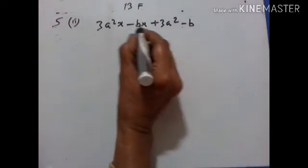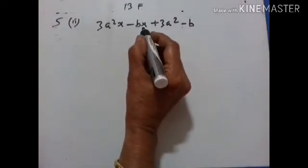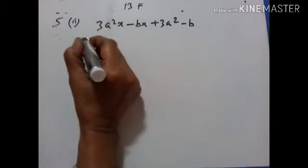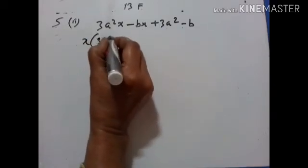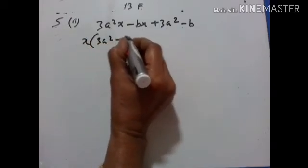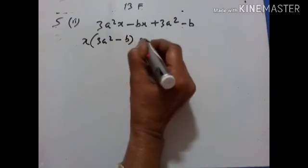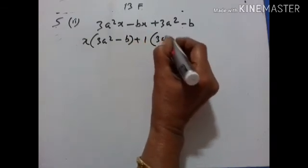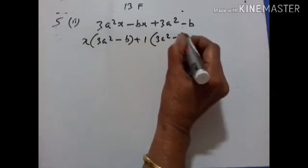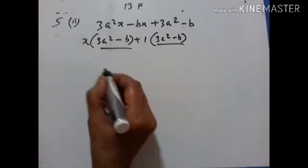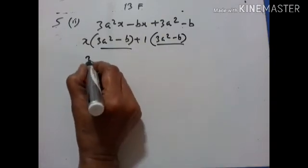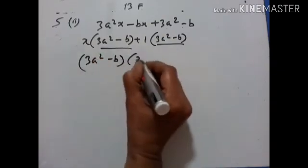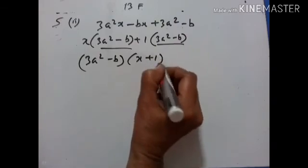Here X is common. X into 3A² minus B, plus 1 is common, giving 3A² minus B. So 3A² minus B is common, and the factored form is 3A² minus B into X plus 1.